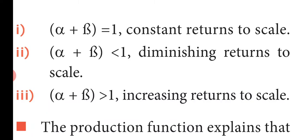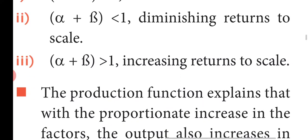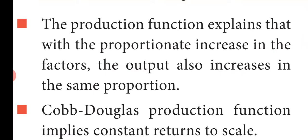When output equals 1, it is constant return to scale. In the Cobb-Douglas production function, we emphasize constant return to scale — meaning there is a proportionate increase in the factors, so a 1% increase in input results in a 1% increase in output. GDP is also described as a production function with constant return to scale.